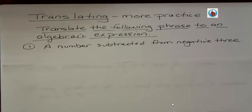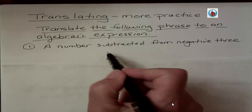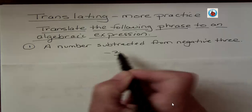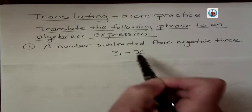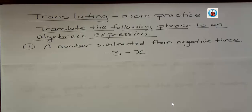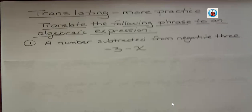Well, we're subtracting a number from negative three. So we start with negative three and we're subtracting a number from that. Let's say our number is x. It could be any variable. It doesn't say what variable to use, but it looks like that when you translate it.